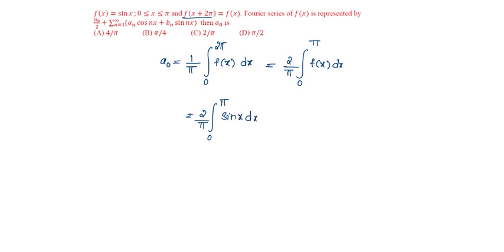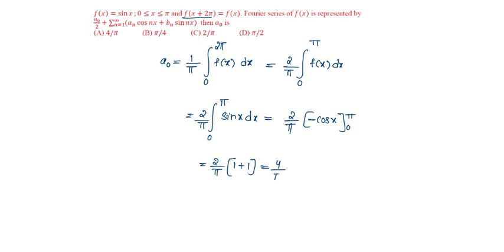This is equal to 2 by pi, integration of sin is minus cos, so minus cos x from 0 to pi. Cos of pi is minus 1, and there is already a minus, so it becomes plus 1, plus cos 0 is 1, which is equal to 4 by pi. The answer is A.